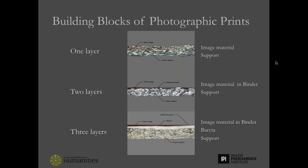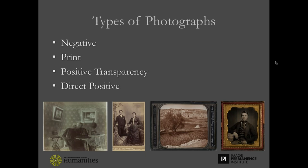To review: one-layer photographs have just image material and a support. Some photographs are two layers, which include a support and a binder with the image in the binder. Other photographs have three layers, in which the barita is coated onto the support and the binder holding the image material is then on top of the barita. This idea of layer structure is important in discussing 19th century photographic prints, as these different configurations result in different visual characteristics used for identification.